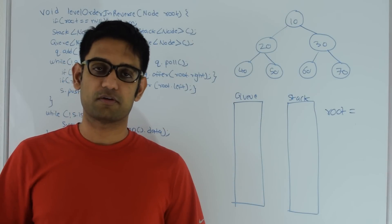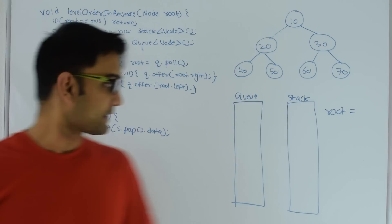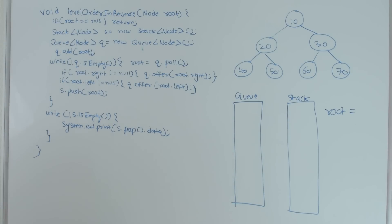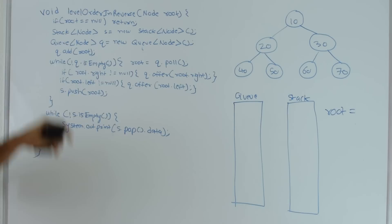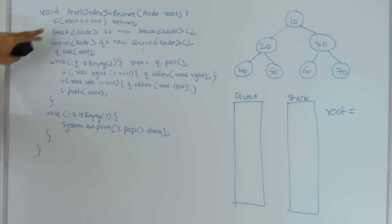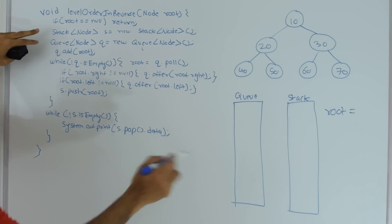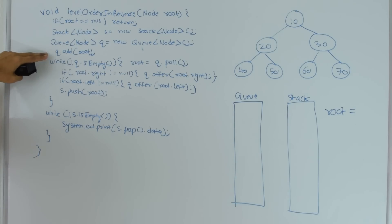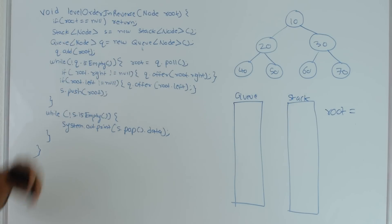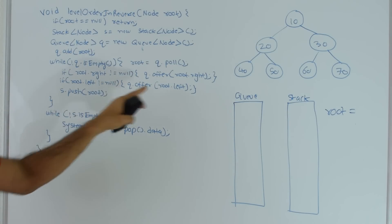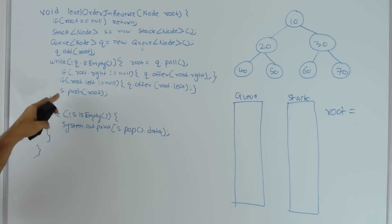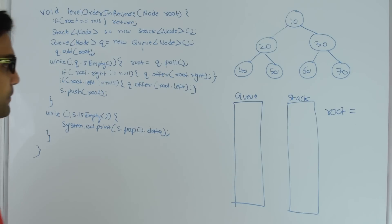Next let's look at the code for this algorithm. The code is extremely simple and it exactly does what I described. The function is called level order traversal in reverse and it takes the root of the binary tree. If the root is null it just returns; otherwise it initializes a stack and a queue, adds the root to the queue, and then keeps looping while the queue is not empty — checking right and left children, adding them to the queue, pushing the current node into the stack, and finally printing elements from the stack one by one.